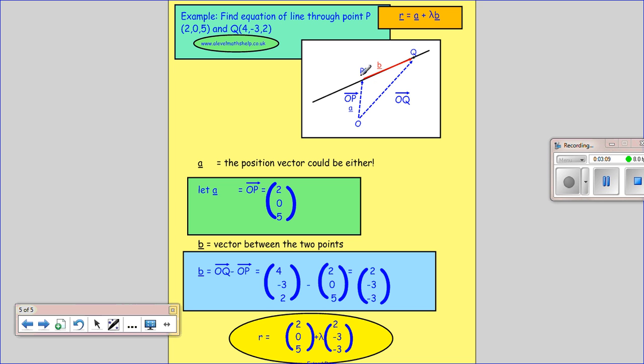So I want the position vector OP, which gets me onto the line. And if you remember, when you find a position vector of a point, all you do is use the coordinates of that point, so it would be 2, 0, 5.